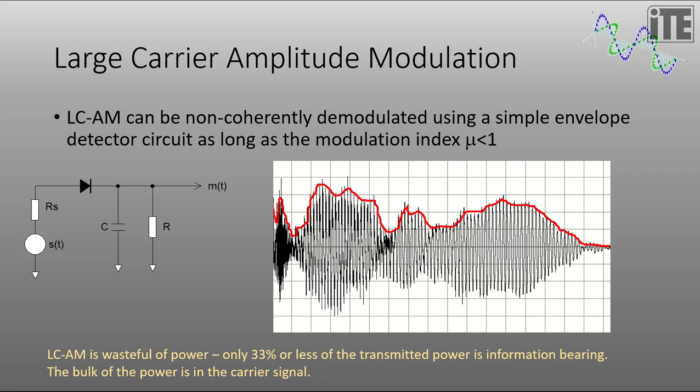So what the effect of this is, if this is our modulated signal here, the black one, the envelope detector circuit as shown here would produce this red signal here. So it would simply follow the outline of the envelope of the signal. So that's how we use a very simple circuit to detect AM. You can actually build yourself one of these at home. It's very simple.